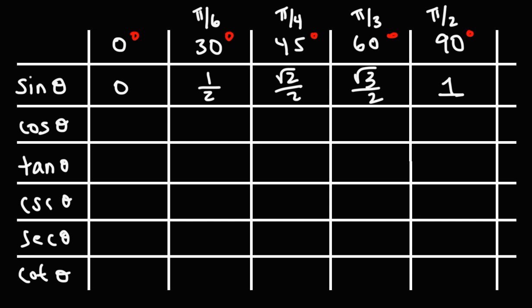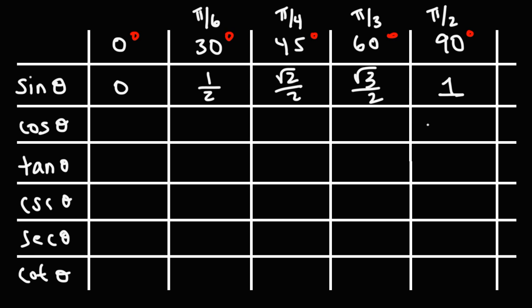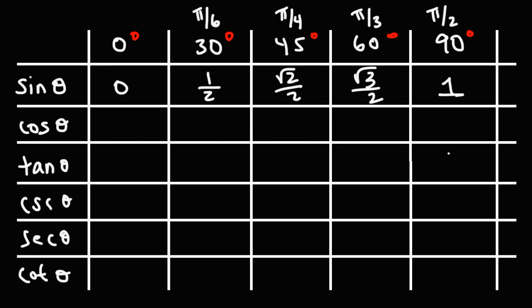Now for cosine, the reverse is true. As you go from 0 to 1, you're going in the opposite direction. Cosine 90 is 0, cosine 60 is 1/2, cosine 45 is square root of 2 over 2, cosine pi over 6 is root 3 over 2, and cosine 0 is 1.